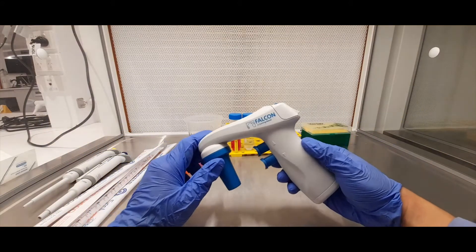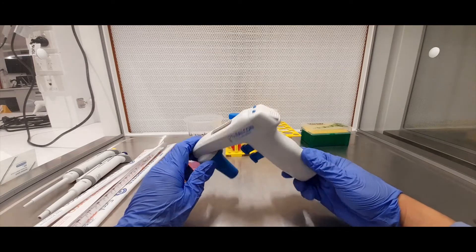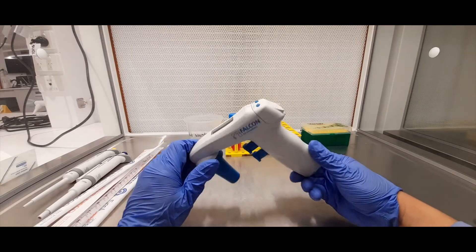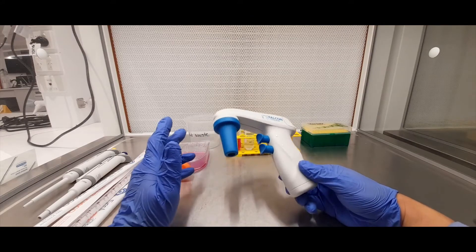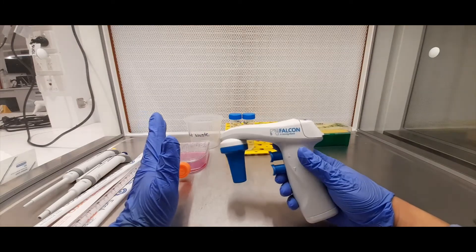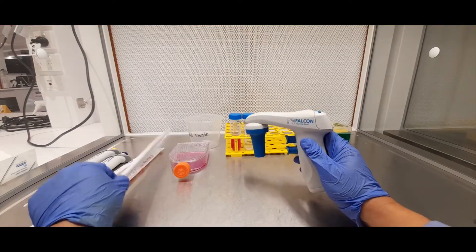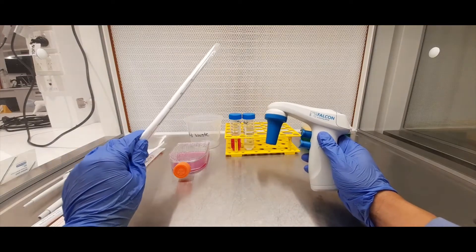So the first thing I'll start off with is this gadget here. This is called an electronic pipette aid. It's also called a pipette gun but basically it's just another form of a pipette. It's a liquid handling device and it's designed to be used with these serological pipettes.